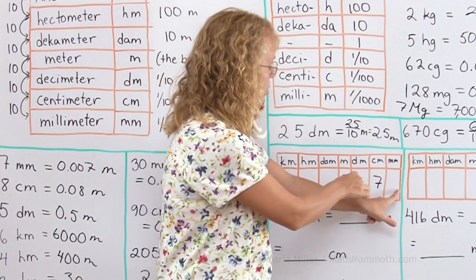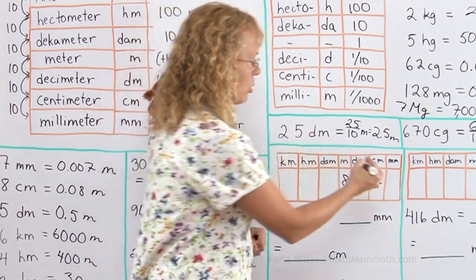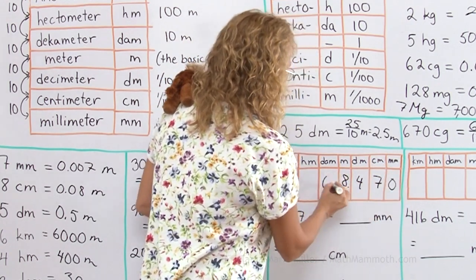So I will see it would be 8,470. And when I'm doing the conversion, I need to often put zeros in these other empty places.